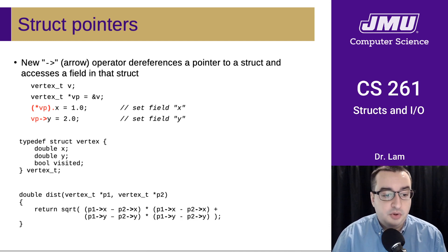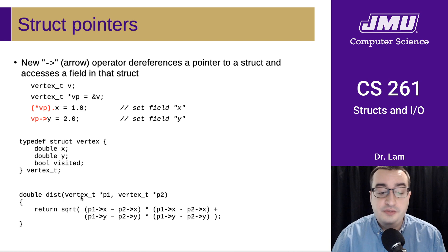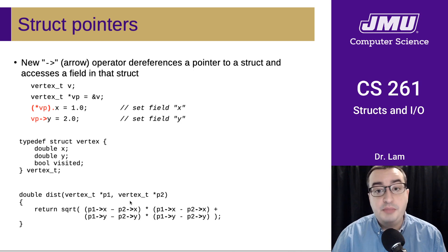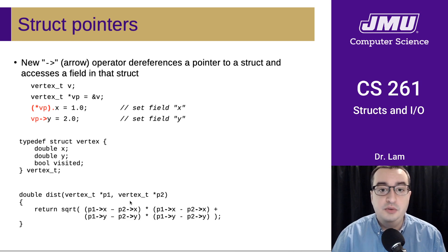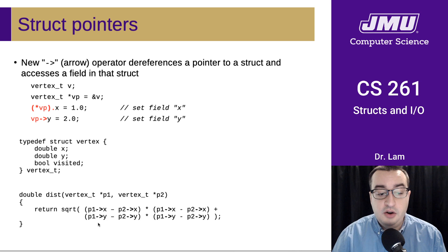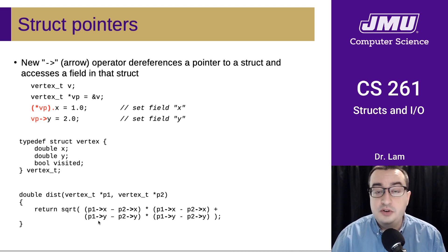Here's an example of how we might rewrite the distance function using vertex_t pointers rather than vertex_t values. The benefit is that we don't have to copy the entire struct when we call distance — we only copy two pointers. However, we now have to use the arrow syntax rather than the dot syntax because these are pointers and not struct variables.